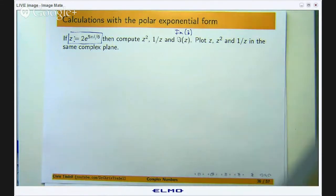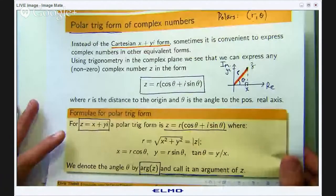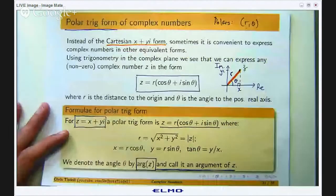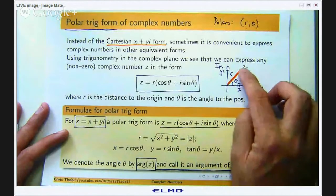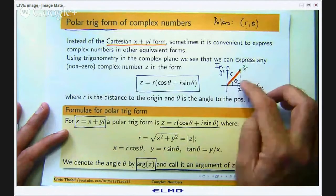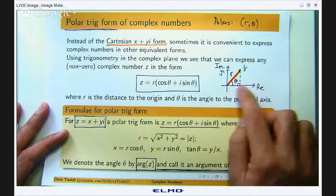So let me just refresh our memory on different polar forms. Okay so basically you have got a point in the complex plane.